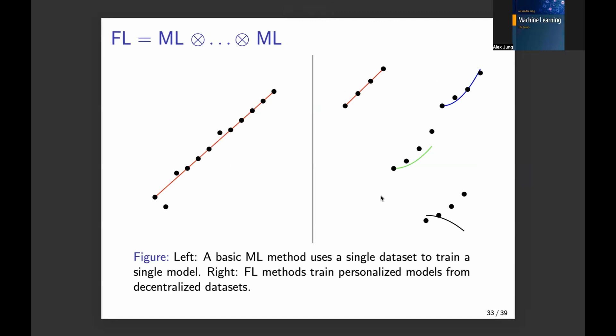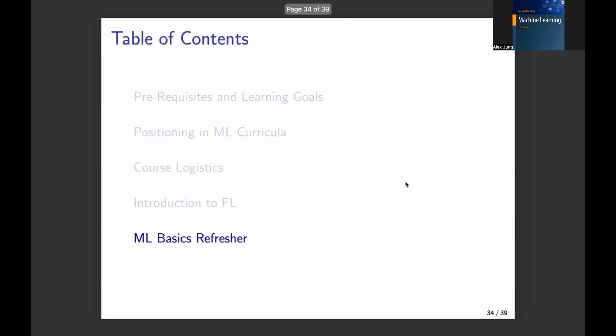And a more abstract depiction of this generalization is you have here a single point cloud. This is machine learning here on the left. We have here machine learning. And on the right, we have federated learning. So we have several point clouds. And for each point cloud, we want to train a different model. But somehow we want to also share information between those model training instances.